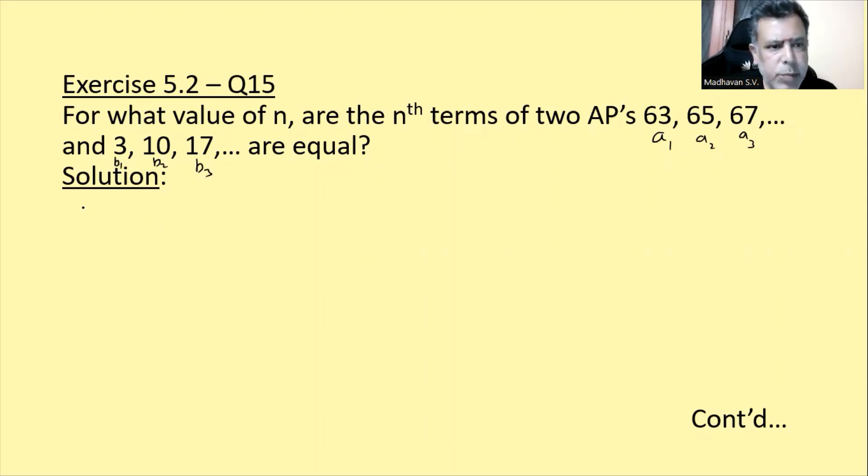So, in first arithmetic progression, in AP1, term 1 matlab A1 is 63, and the common difference isko D1 bola. Arithmetic progression ke liye, yaha pe common difference notice it is 65 minus 63, 67 minus 65. So, it is 2.